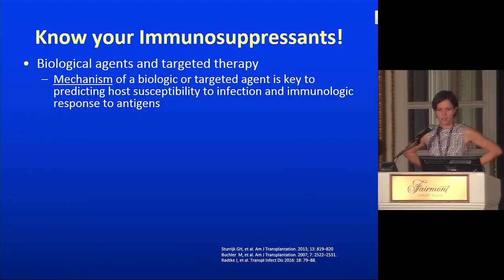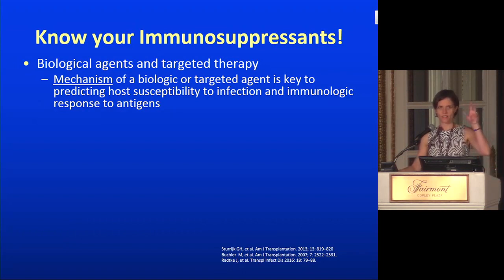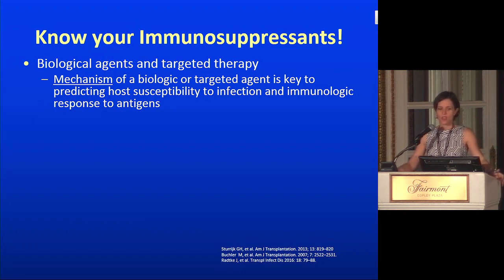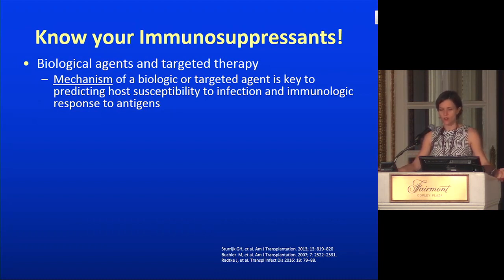It's really important to understand immunosuppressants in these patients. Biological agents and targeted therapies like bortezomib — you have to think about the mechanism and what that's going to do to the person's immunity. The mechanism is the key to predicting host susceptibility. For example, rituximab is widely used for humoral rejection. It's an anti-CD20 antibody that takes out CD20-positive B cells, making it so the person can't really respond to vaccines — and that effect lasts for six to twelve months after the rituximab is given.